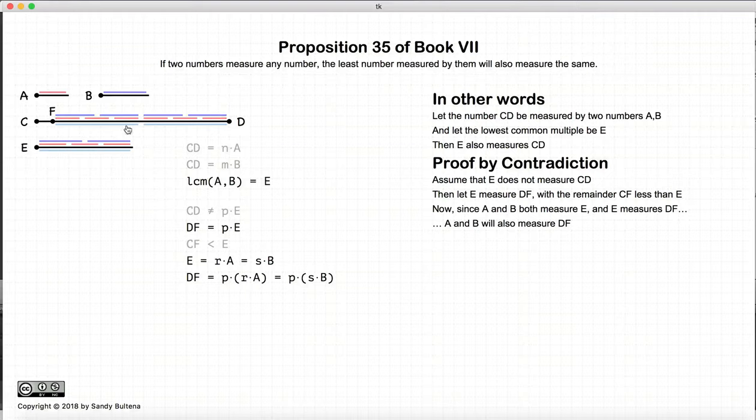And we can see this visually if we look at this is E. And since A measures E, it nicely measures it here. And again, it will do it the same. Or we can look at it algebraically, and we can see that since E is equal to R·A, DF will be measured P number of times of E. E is R·A. So we can see that A measures DF. What's interesting here is that as far as I know, Euclid never actually proves this.